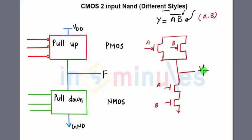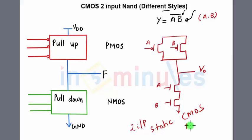You can see that the output is taken from the pull-up and pull-down network together — this is my Vout. If you plug in the truth table values for A and B, you'll see it satisfies the truth table, and this is a two-input static CMOS NAND. Remember the shortcut: hide the bar, whatever is underneath is your pull-down network, and the complement is your pull-up network. That completes the static CMOS style.